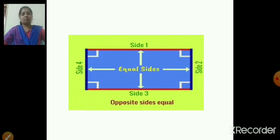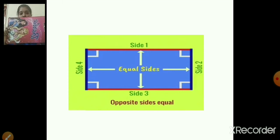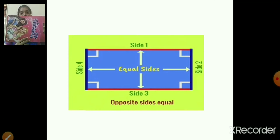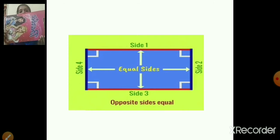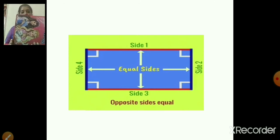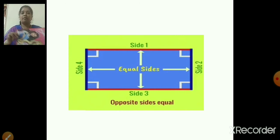Now I have this writing pad with me. This writing pad is also rectangle in shape, and it also has four sides: one, two, the bottom one — three, and this is four. So a writing pad is also rectangle in shape.